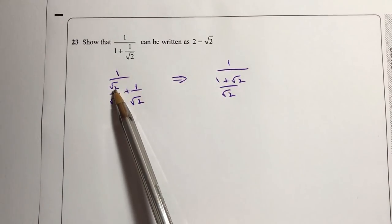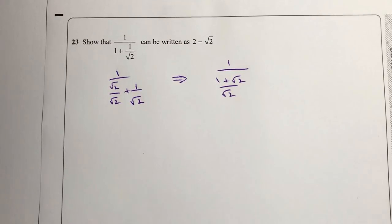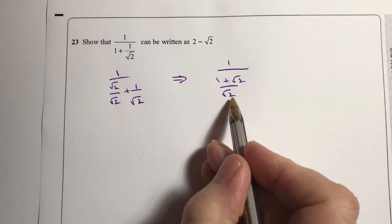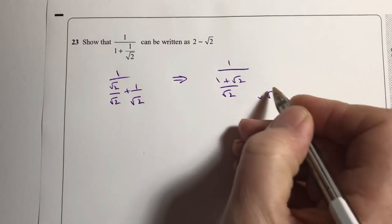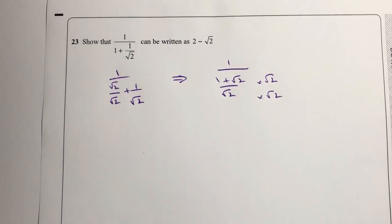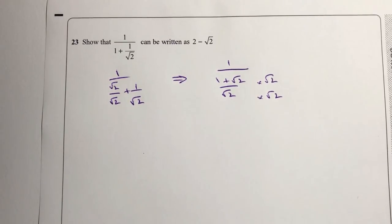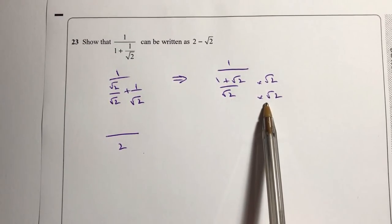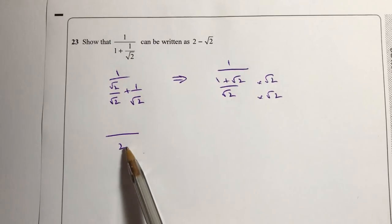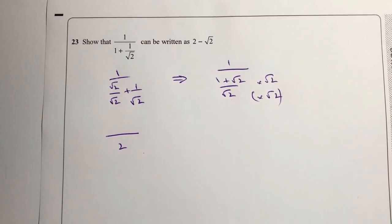I could have written root 2 plus 1, but I've just swapped it around because it looks a little bit better. Now I'm going to deal with the bottom and rationalise the denominator — I'm going to get rid of that root 2 by multiplying through by root 2 over root 2 at the bottom. If I multiply these two roots together I get 2, because root 2 times root 2 is root 4, and the square root of 4 is 2.